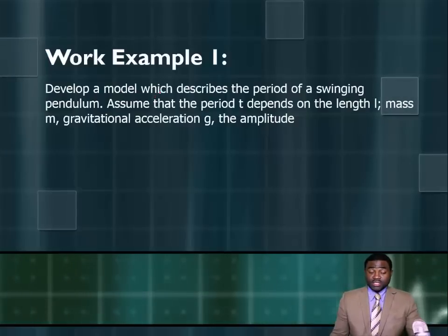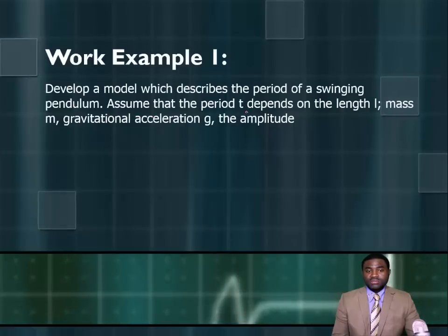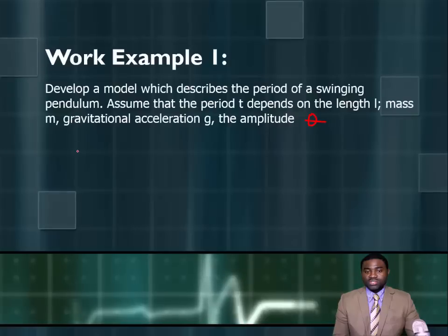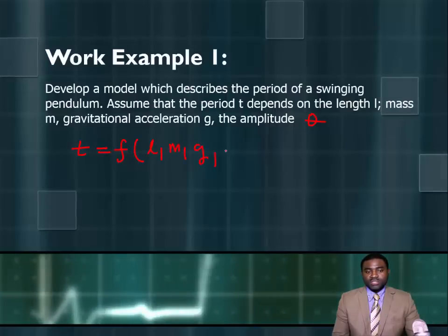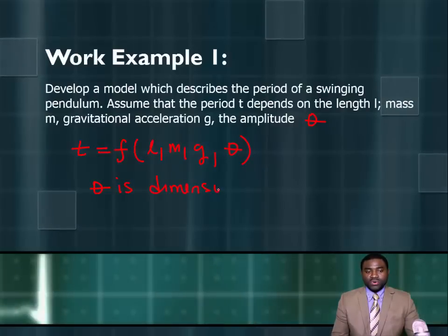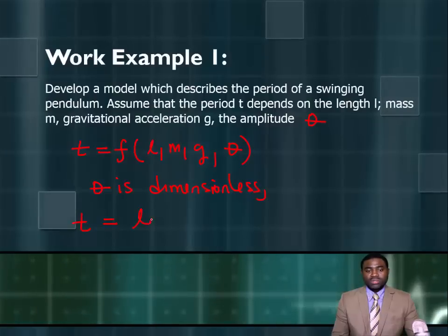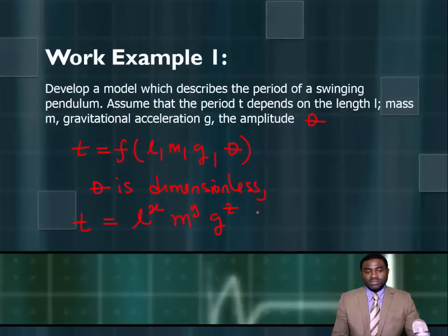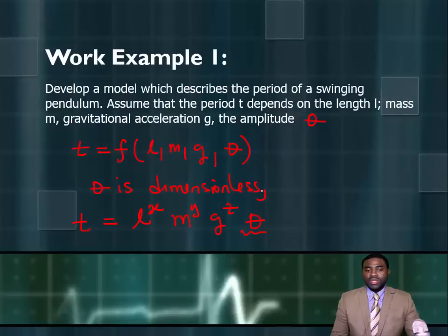Let's look at some sample examples. The question says: develop a model which describes the period of a swinging pendulum. Assume that the period T depends on length, mass, gravitational acceleration, and amplitude theta. Theta is dimensionless, so T will be equal to L raised to the power X, M raised to the power Y, and G raised to the power Z, times theta.